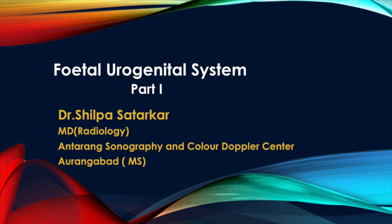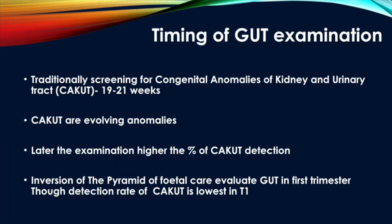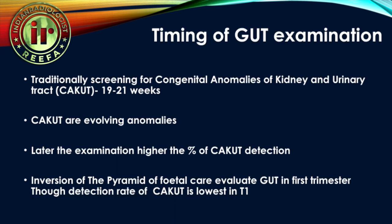Good evening. In the fetal urogenital system Part 1 we will include renal anomalies, while in Part 2 we will include the bladder, adrenal, and other anomalies. Traditionally, screening for congenital anomalies of the kidney and urinary tract, called CAKUT, is done at the routine anomaly scan between 19 to 21 weeks.